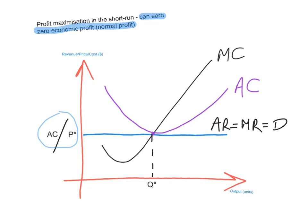If you don't remember that, you may need to revisit a previous video on economic, normal, and abnormal profit. In this scenario, the firm is earning a normal profit in the short run: marginal revenue intersects marginal cost, and it just so happens that at this price, it also equals average cost.